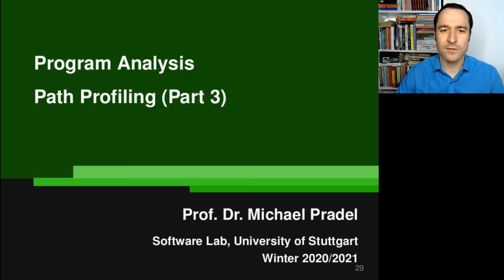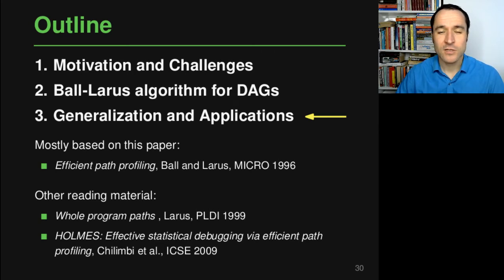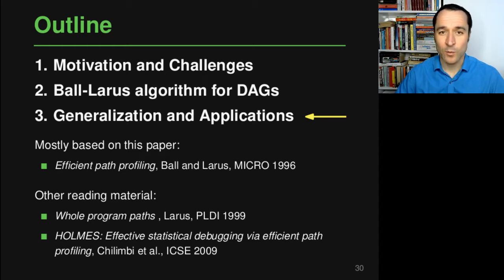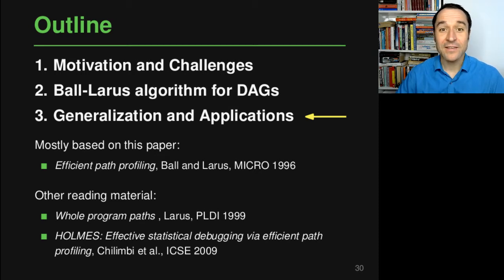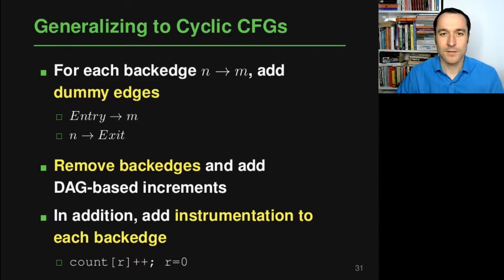Hi and welcome back to program analysis. This is video number three of the lecture on path profiling. What we want to do in this third part is look at a generalization of the algorithm we've seen previously, going from directed acyclic graphs to arbitrary control flow graphs, and then briefly look at some of the applications of this algorithm.